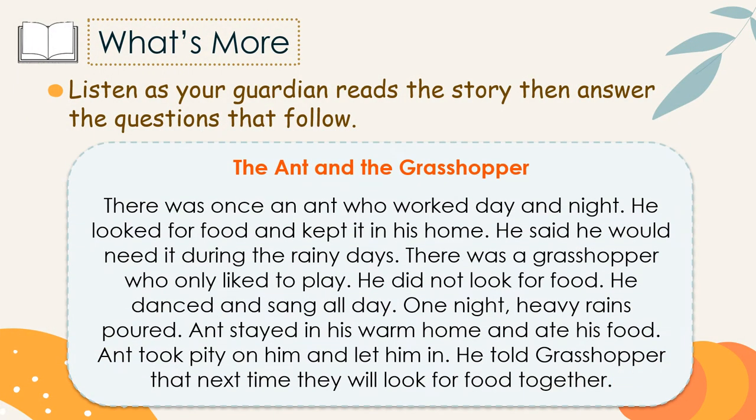Under 'What's More,' listen as your guardian reads this story, then answer the questions. 'The Ant and the Grasshopper.' There was once an ant who worked day and night. He looked for food and kept it in his home, saying he would need it during the rainy days. There was a grasshopper who only liked to play. He did not look for food — he danced and sang all day. One night, heavy rains poured. The ant stayed in his warm home and ate his food.